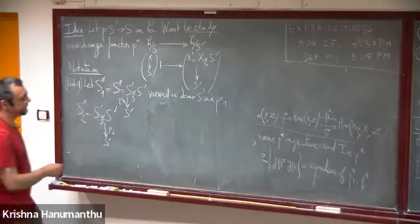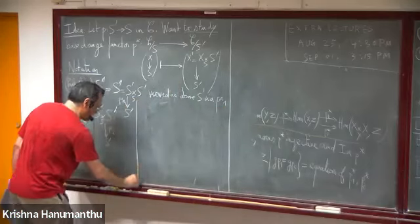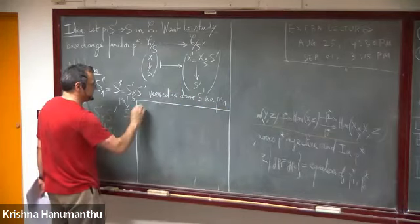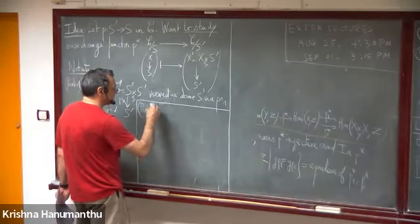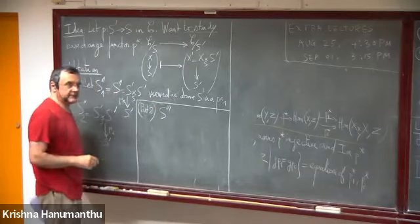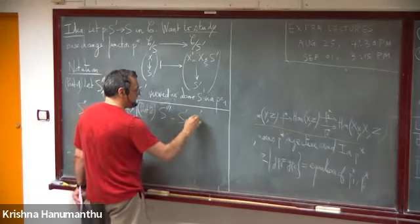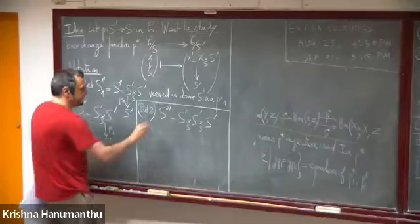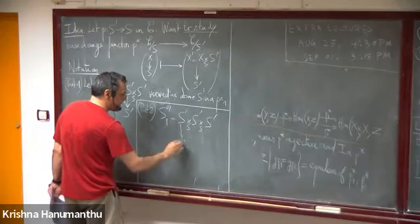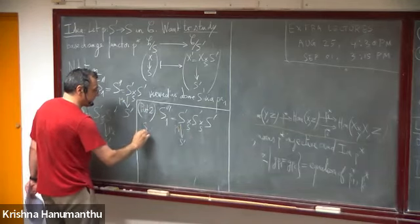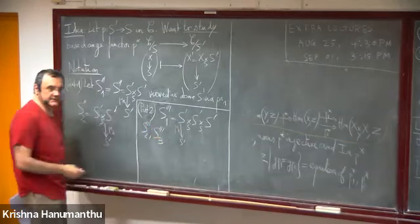This is part one of the definition. The second part: we do the same for the triple fiber product S' ×_S S' ×_S S', putting index 1, 2, or 3 depending on which projection we use as the structure map to S'.